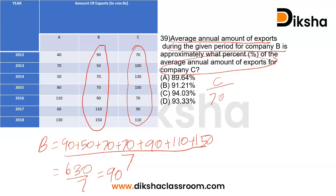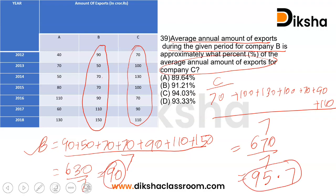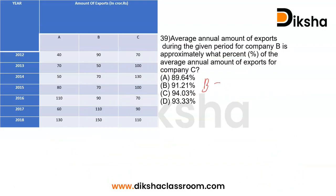For company C, we have 70 plus 100 plus 130 plus 100 plus 70 plus 90 plus 110, divided by 7. Adding: 170, 300, 400, 470, 560, and 670. So 670 divided by 7 gives 95.71. We got the average annual export of company B as 90 and company C as 95.71.